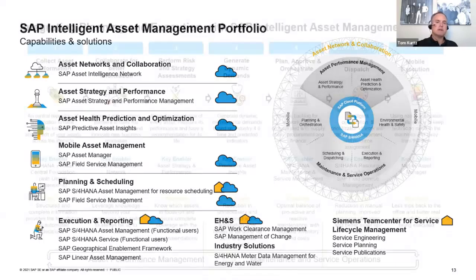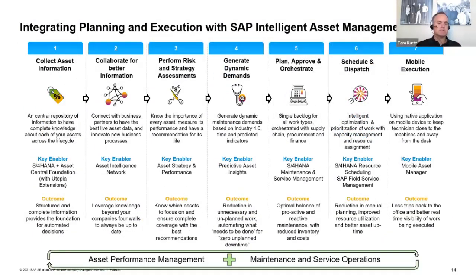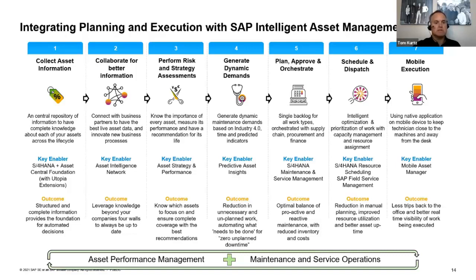Moving to the last couple of slides, this is a good summary of everything we just talked about. It brings the end-to-end process flow together: from initially collecting asset information and collaborating with stakeholders, performing risk and strategy assessment to segment and treat things differently, generating dynamic demands that you execute on — sometimes with predictive asset insights — moving into planning, approval, orchestration, scheduling, dispatching, and finally the mobile side. You can see the different components, how they come together, the outcomes you're looking for, and the systems or solutions that are part of the process.